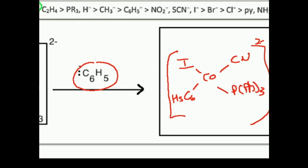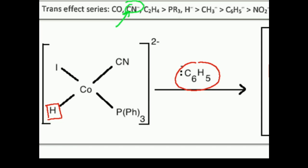And pretty much, that's all there is to a trans-effect problem. You just need to figure out which one of the four ligands already on the metal is farthest to the left on the trans-effect series, or in other words, has the greatest trans effect. And then you just displace the ligand trans to that.